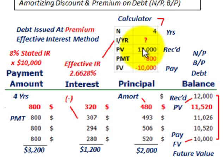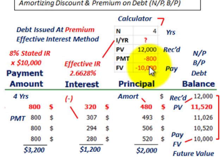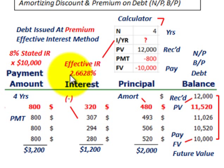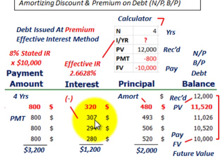Make sure you enter the payment as a minus amount of $800 and the future value as a minus amount of $10,000, with the present value as a positive. You could reverse the signs — present value negative, payment and future value positive. Either way, you're going to calculate an effective interest rate of 2.6628%. That's effectively what we're going to be paying in interest on this note.